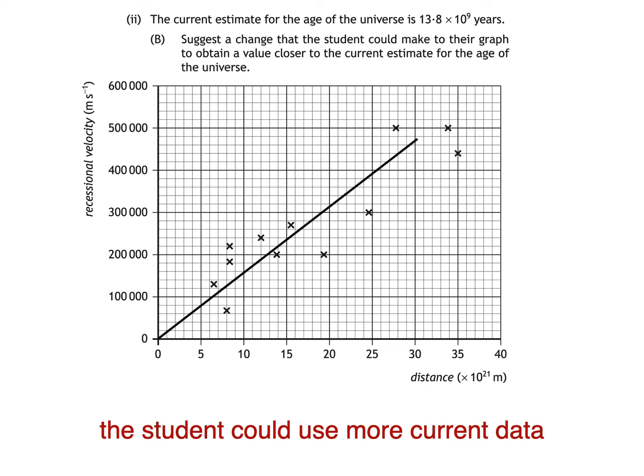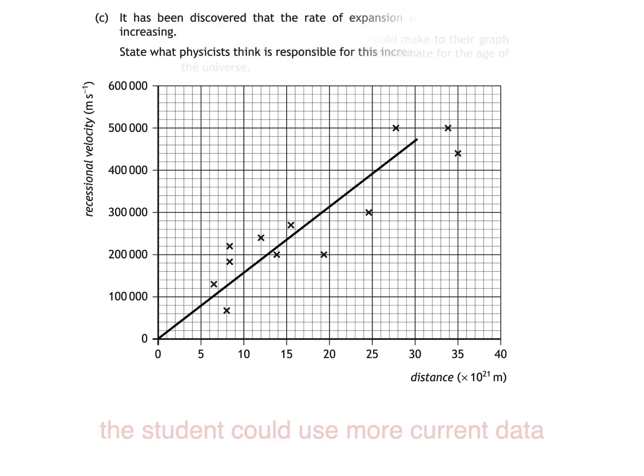And that brings us to part C. It's been discovered that the rate of expansion of the universe is increasing. State what physicists think is responsible for this increase. The answer is, of course, dark energy.